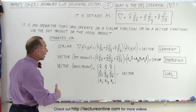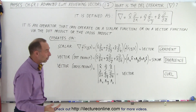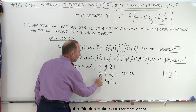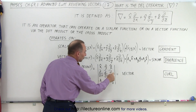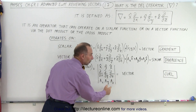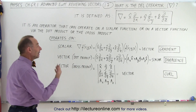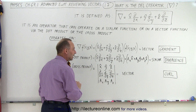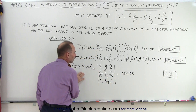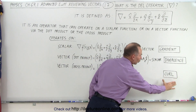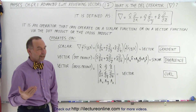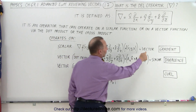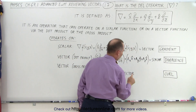Finally, we can take the DEL operator and operate on a vector via a cross product, which can be defined using a determinant. We have the X, Y, and Z unit vectors in the first row. The second row has the partial derivative with respect to X, partial derivative with respect to Y, and partial derivative with respect to Z. In the third row we have the X, Y, and Z components of the vector we're operating on. We end up with another vector — this is called the curl of that vector function. So notice we can operate with a DEL operator on either a scalar or a vector quantity in three different ways: the result is either a vector called a gradient, a scalar called a divergence, or another vector called a curl.